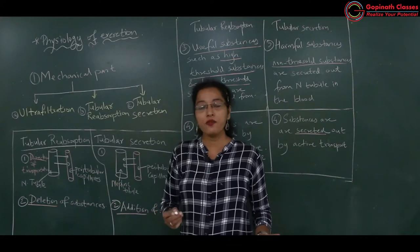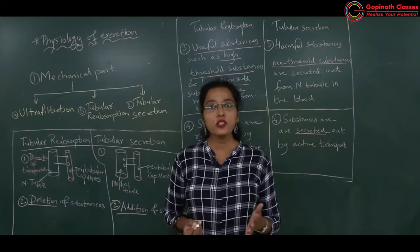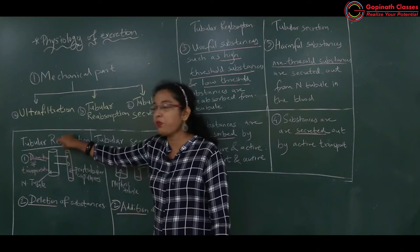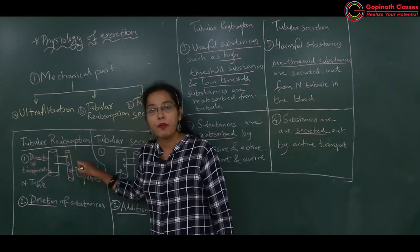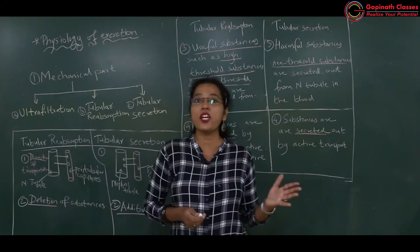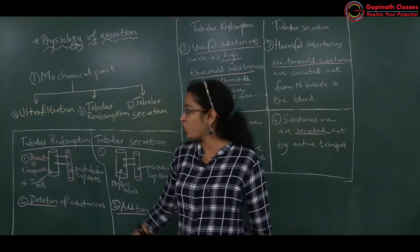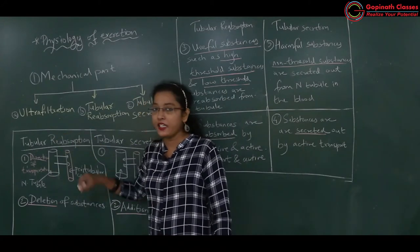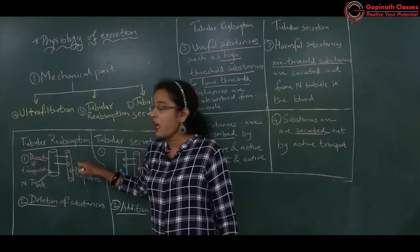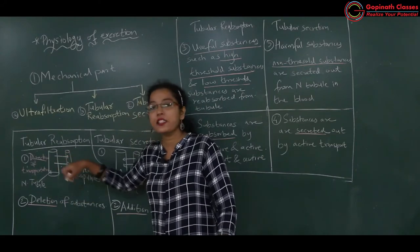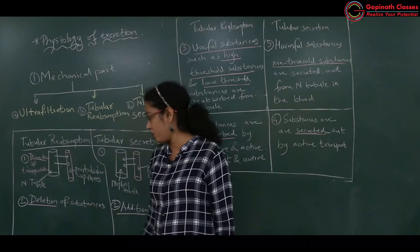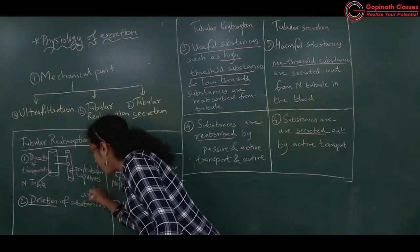Which substances will enter because they are useful for the body? Useful substances such as glucose, amino acids, fatty acids, and glycerol will all be reabsorbed. So the direction of tubular reabsorption is from the tubule into the peritubular capillaries — useful substances move this way, meaning there is deletion of useful substances from the nephric tubule.